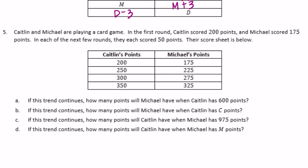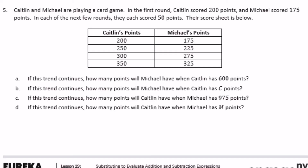Number five: Caitlin and Michael are playing a game. In the first round Caitlin scored 200 points and Michael scored 175 points. In each of the next rounds they each scored 50 points. To get from Caitlin's score to Michael's, you subtract 25 — for example 200 minus 25 equals 175, and 250 minus 25 equals 225. So when Caitlin has 600 points, Michael has 600 minus 25, which is 575 points. If Caitlin has c points, Michael has c minus 25.